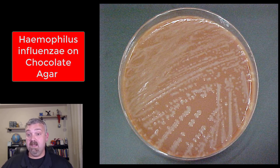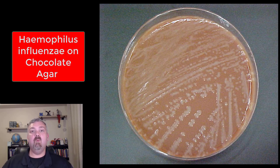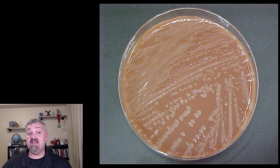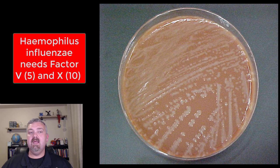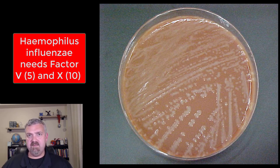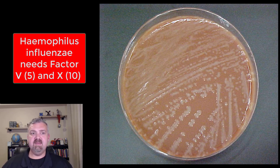This is partially broken-down blood. In this chocolate agar, the blood has been treated and it releases what Haemophilus influenzae needs, which is actually some blood clotting factors — factor 10 and 5, which is NAD. So this is a special enrichment media; this organism will not grow on just any nutrient broth. This is a special type of media designed to grow a certain type of organism — that's what makes it an enriched or enrichment media.